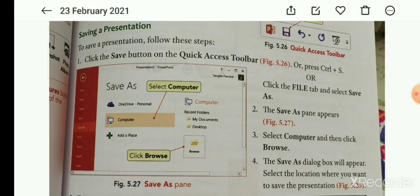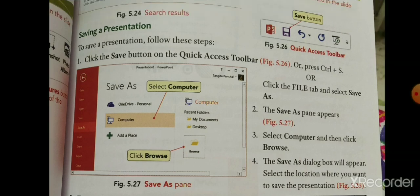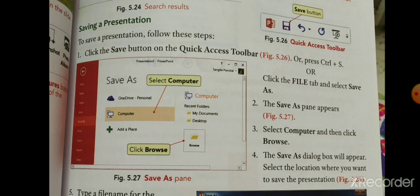Click the File tab and select Save As — यह तीसरा तरीका है। File tab में जाके Save button पर click करेंगे तो भी document save हो जाएगा। Save pane appear होगा, जैसा figure 5.27 में दिख रहा है।